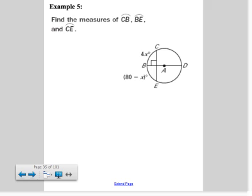The last example we'll look at, example 5, says find the measures of arc CB, arc BE, and arc CE. First, here's the diameter. It's perpendicular, which means it bisects. It bisects the chord, and it also bisects the arc.